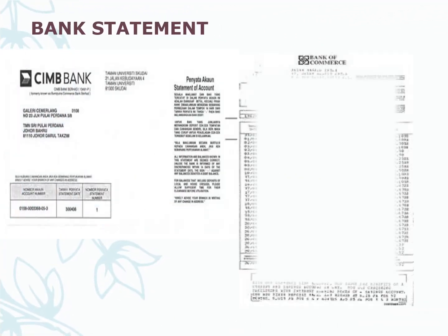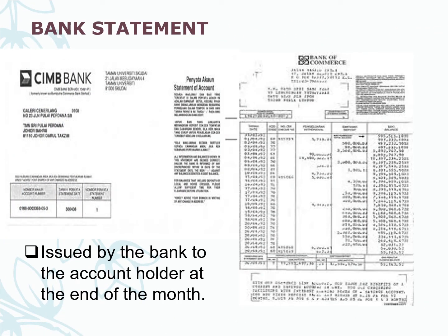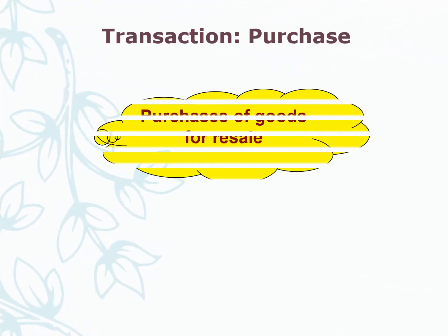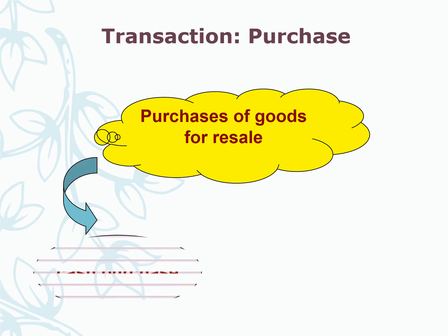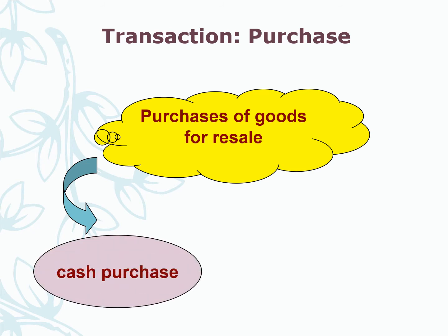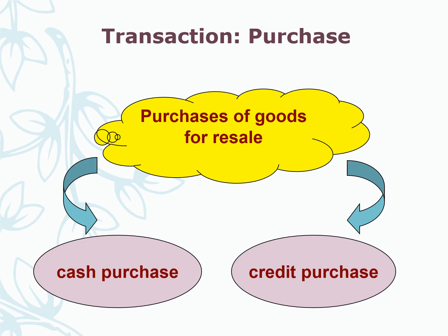Bank statement. A bank statement is issued by the bank to the account holder at the end of the month. The term 'purchase' is used for purchases of goods or merchandise for resale. There are two types of purchase: cash purchase and credit purchase.